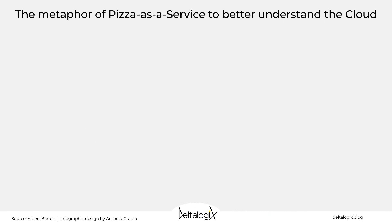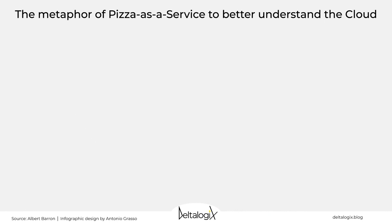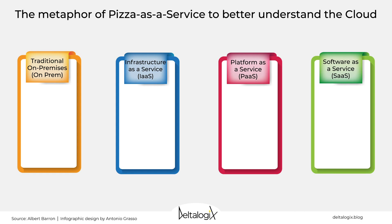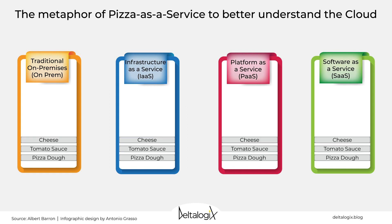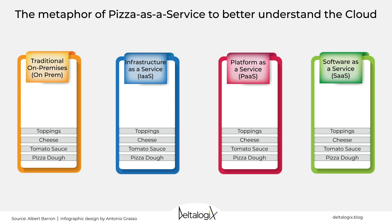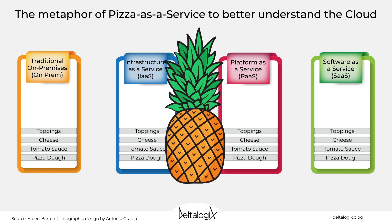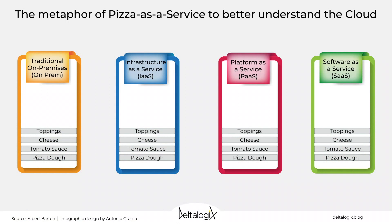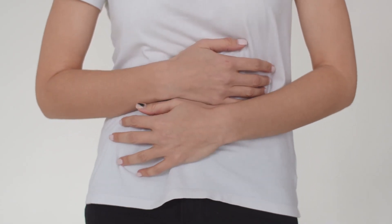Here we have the four different sections related to cloud: on-premise, infrastructure as a service, platform as a service, and software as a service. Now we are going to fill these sections with the components that are needed to make pizza and eat it. The basis of course is pizza dough, followed by tomato sauce, cheese, and toppings. You can choose whichever ingredient you like, but please — not pineapple. As an Italian coming from Napoli, the city where pizza was originally born, I can assure you there are plenty of toppings which really are more tasty for pizza.